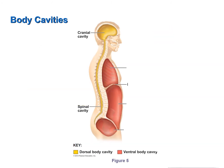We have two basic cavities of the body. The dorsal body cavities are located on the dorsal side, shown here in gold. The dorsal body cavity houses our central nervous system — the brain, which is housed in the cranial cavity, and the spinal cord, which is housed in the spinal cavity. Our entire dorsal body cavity is enclosed in bone.